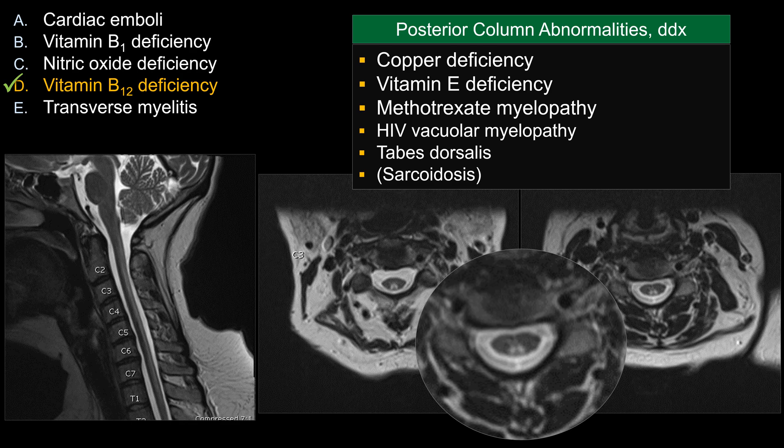There is a relatively short differential diagnosis for lesions causing posterior column myelopathy like this: copper deficiency and vitamin E deficiency can look identical to this. Methotrexate toxicity — especially intrathecal methotrexate — can present with dorsal column involvement. Patients with HIV or neurosyphilis with tabes dorsalis can look similar. Neurosarcoidosis can also do this, though it typically involves more than just the dorsal column and shows other findings, but it can certainly be in the differential.